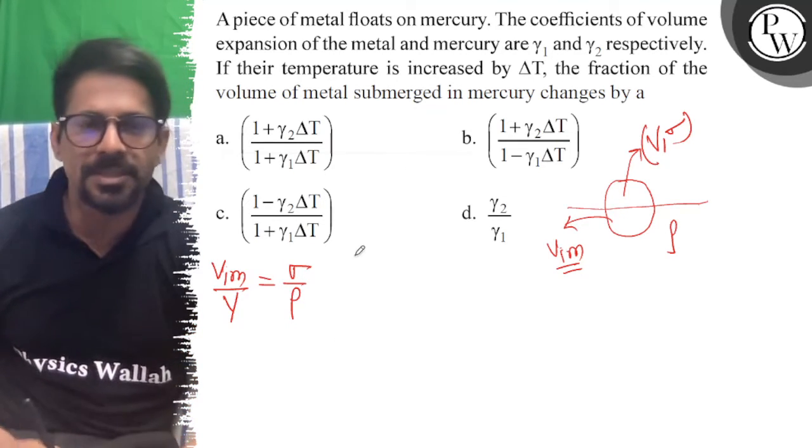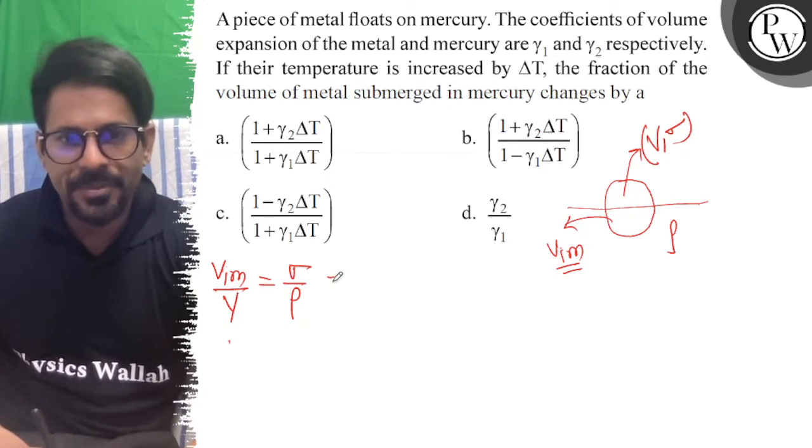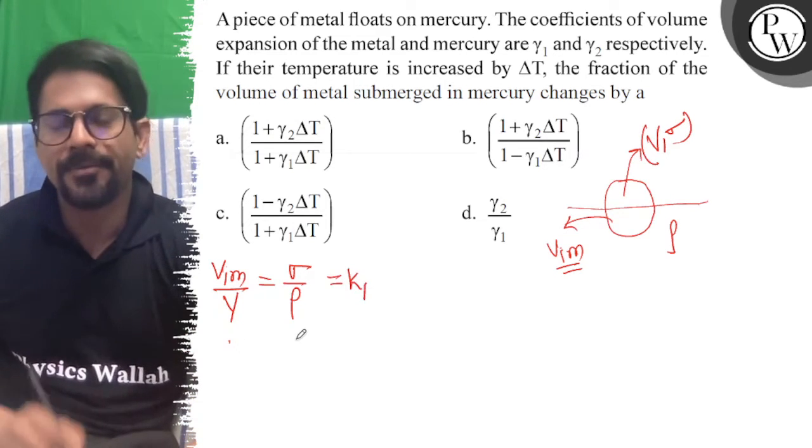V immersed by V is sigma upon rho. Now let's say this is K1 because we want to find the fraction of change.